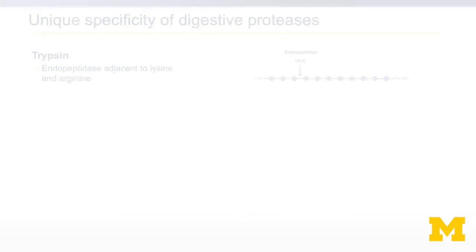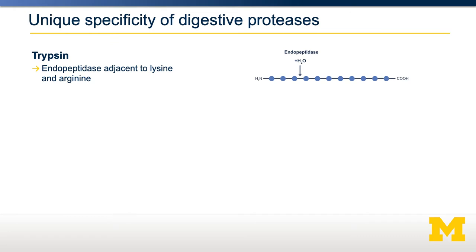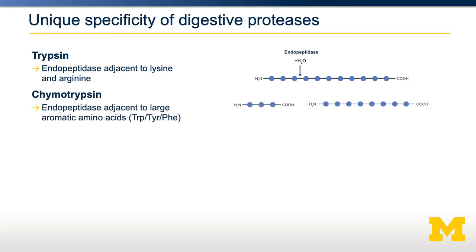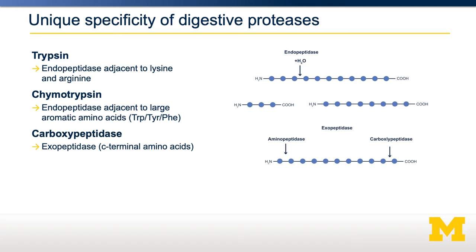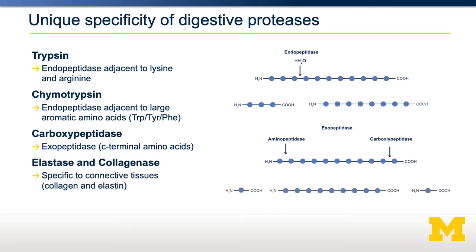Each of these enzymes has unique specificities. Trypsin prefers to cut adjacent to lysine and arginine. Chymotrypsin, on the other hand, prefers to cut next to large aromatic amino acids — tryptophan, tyrosine, and phenylalanine. Carboxypeptidase and aminopeptidase cut from the ends; they are exopeptidases, so they chew from either end inward. Elastase and collagenase are specific to elastin and collagen, two proteins with very unique structures that have specific requirements for proteases.